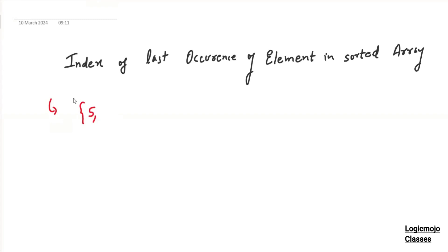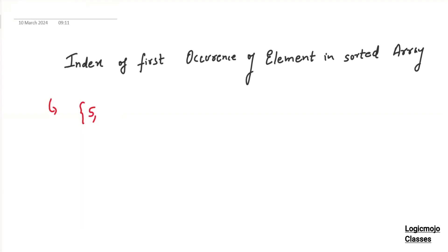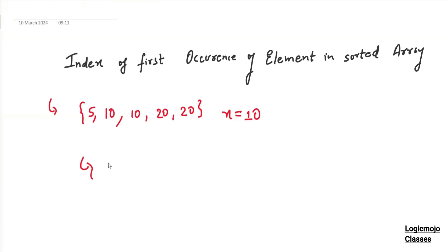Let's first discuss first occurrence, then we'll discuss last occurrence. So let's say we have to find the first occurrence of an element in a sorted array. Let's say given the elements as 5, 10, 10, 20, 20, and the element that you have to find is 10. You need to return the first occurrence of this element in the array — it will be index one. So 10 has appeared two times at index one and two.